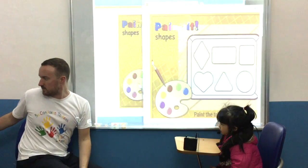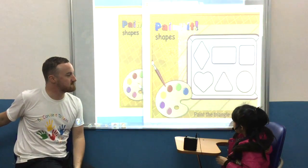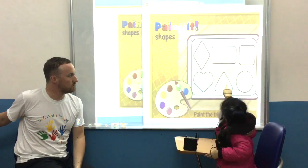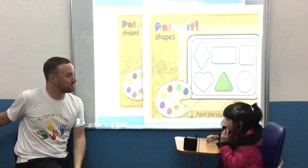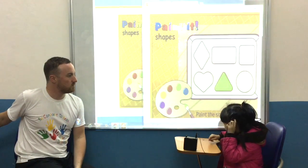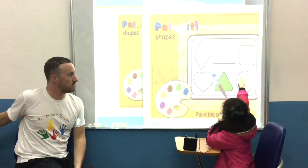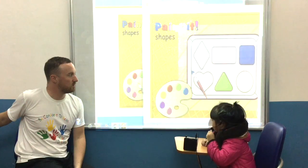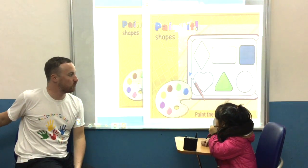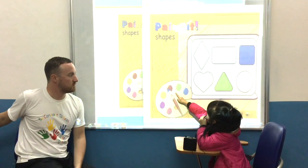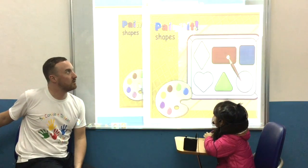Let's look at shapes. Pick the triangle green. Good. And the square blue. Square blue. Good. And the rectangle red. Rectangle red. Good. Good job.